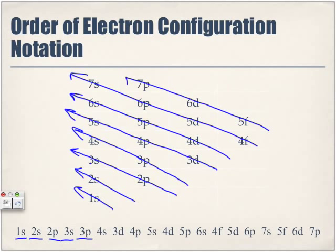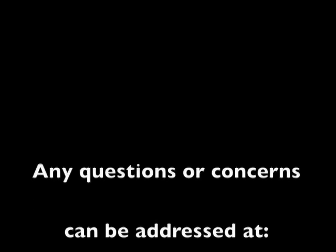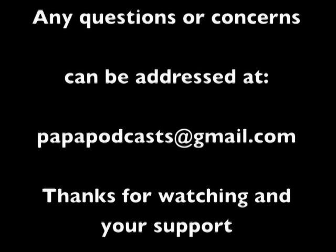At the very end of the periodic table, the last subshell we encounter will be 7p.